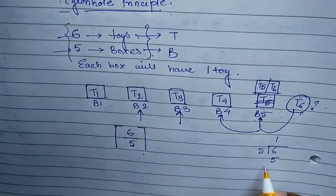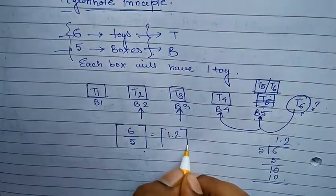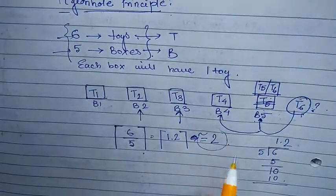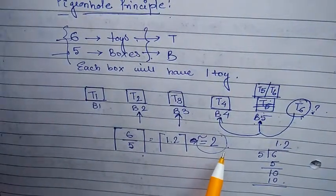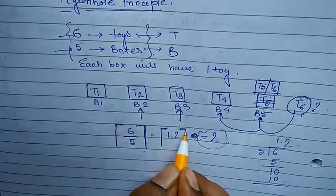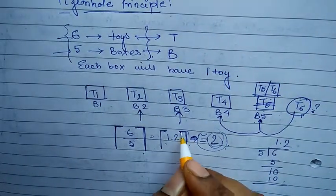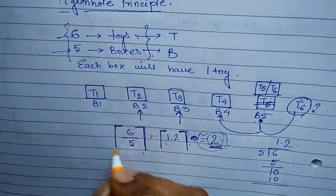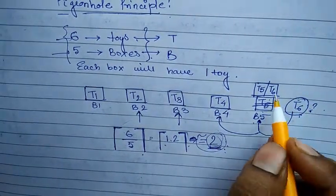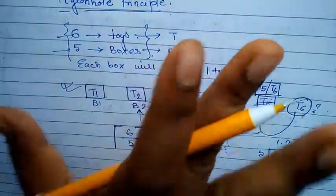What I'm actually doing is simple division: I divide 6 by 5, which gives 1.2. I then take the ceiling value, which gives 2. What does this mean? There will be one box that will adjust two elements — two toys. This bracket represents the ceiling value; that is the reason we take 2 instead of 1. So the principle gives us 2, and we have done the same in our example — we kept two toys in one box.